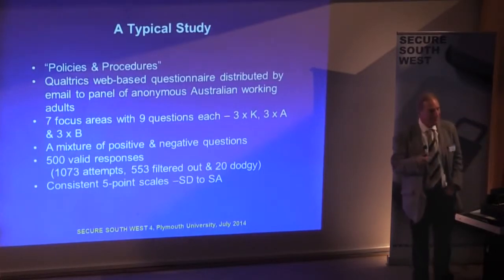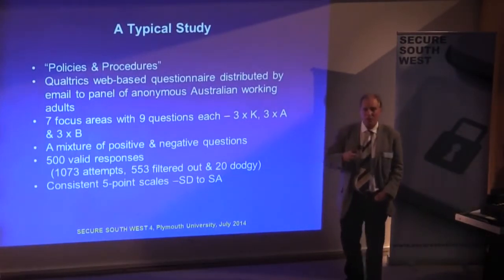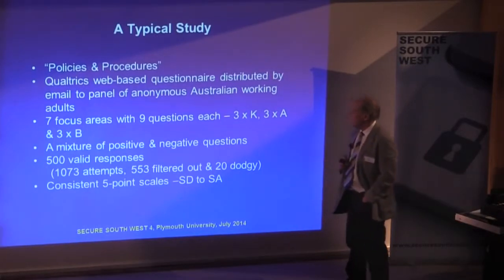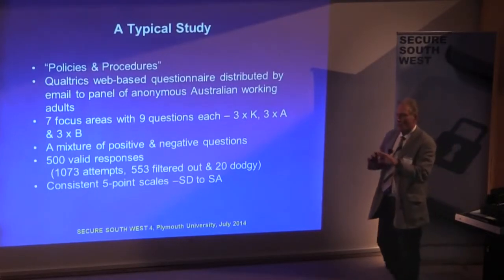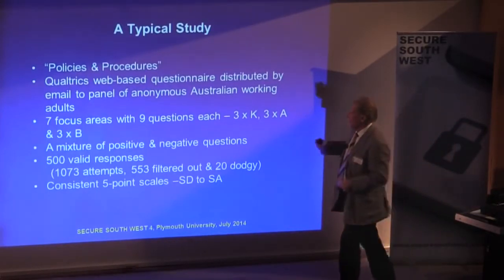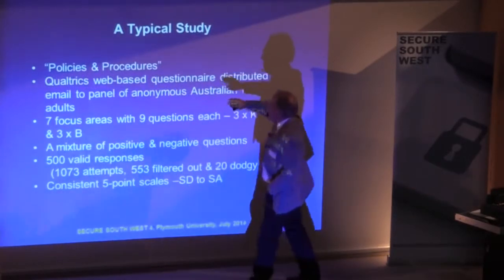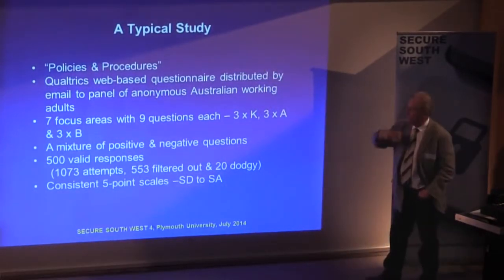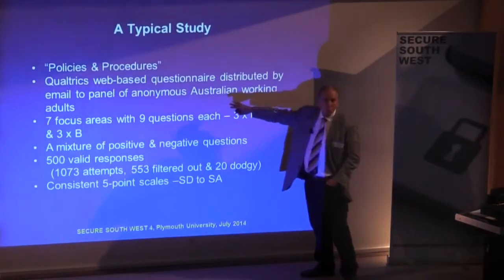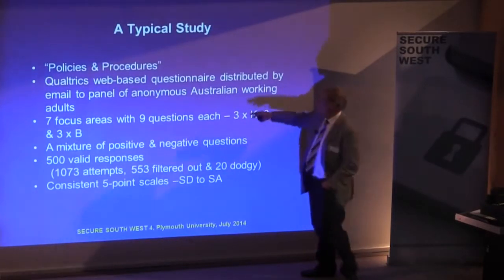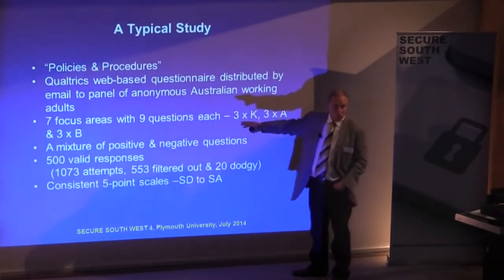A typical study — done by my group — was this. We tried to examine whether the KAB model — Knowledge, Attitude, and Behaviour — was acceptable and valid. We used knowledge of policies and procedures and attitude towards policies and procedures. We used Qualtrics, a survey firm where you write your own web-based questionnaire and distribute it to a panel, and ended up with 1,073 Australian working adults. That cost about $7 each.